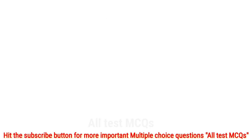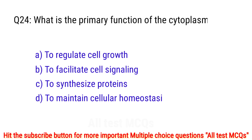Question number 24. What is the primary function of the cytoplasm? The right answer is option D: to maintain cellular homeostasis.